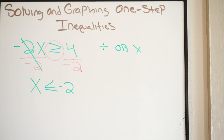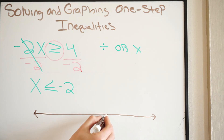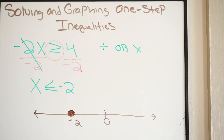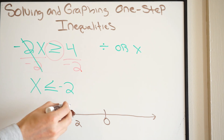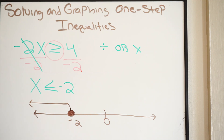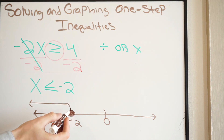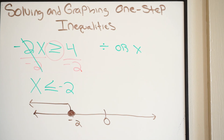Let's graph x ≤ -2 on a number line. Here's zero and here's negative two. Since it's equal to, I'm making a closed circle at negative two because it will be part of the solution. Using the pointer method, it's telling you to go to the left — all real numbers less than or equal to negative two — so shade to the left toward negative infinity. That is solving and graphing one-step inequalities.